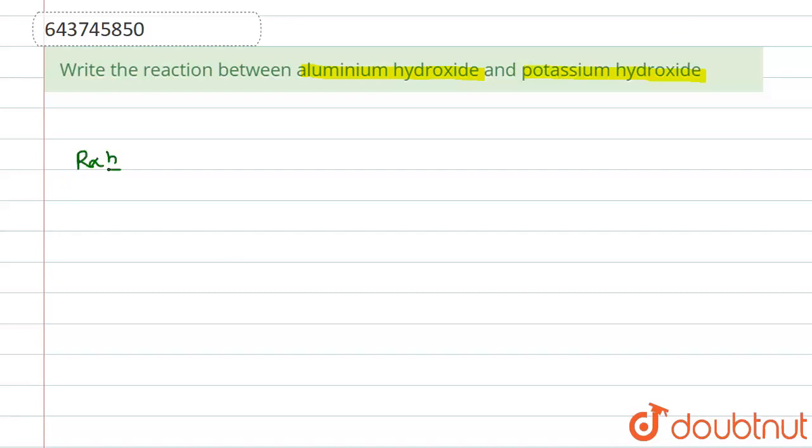We have aluminum hydroxide, Al(OH)₃, and it is reacting with potassium hydroxide, that is KOH.